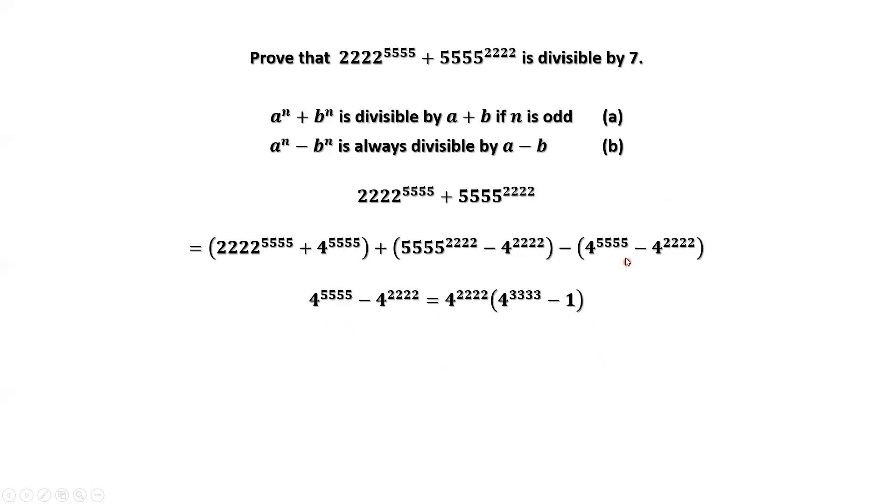Let's check the last group. We can factor the common factor 4 to the power 2222 out. Then we have 4 to the power of 3333 minus 1. We can rewrite 4 to the power of 3333 as 4 to the power of 3, then to the power of 1111. 4 to the power of 3 equals 64. 64 to the power of 1111 minus 1 is 1 to the power of 1111.